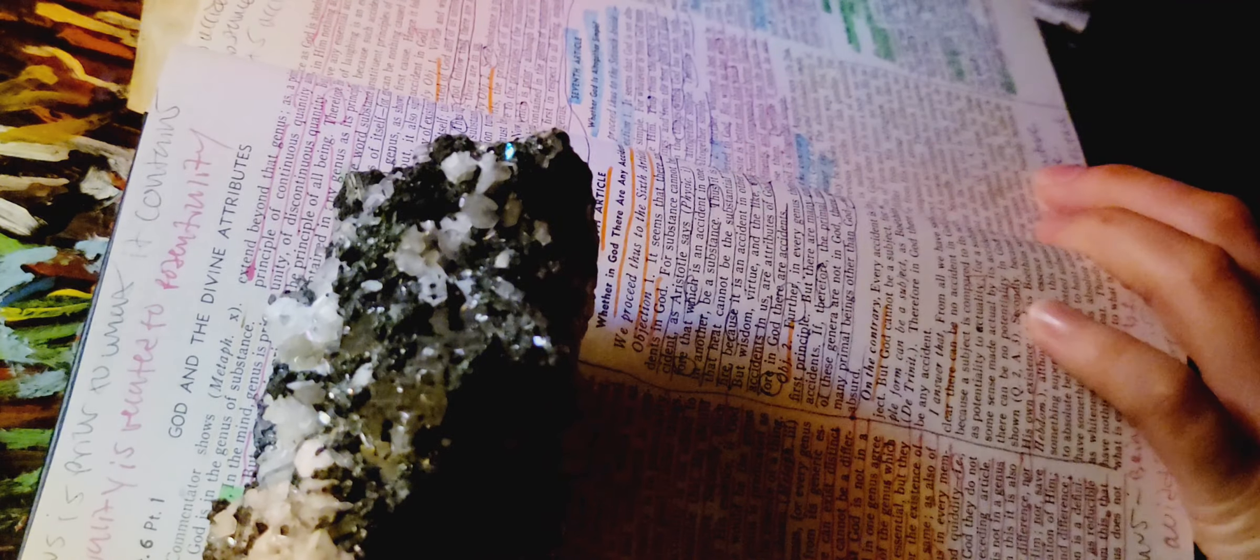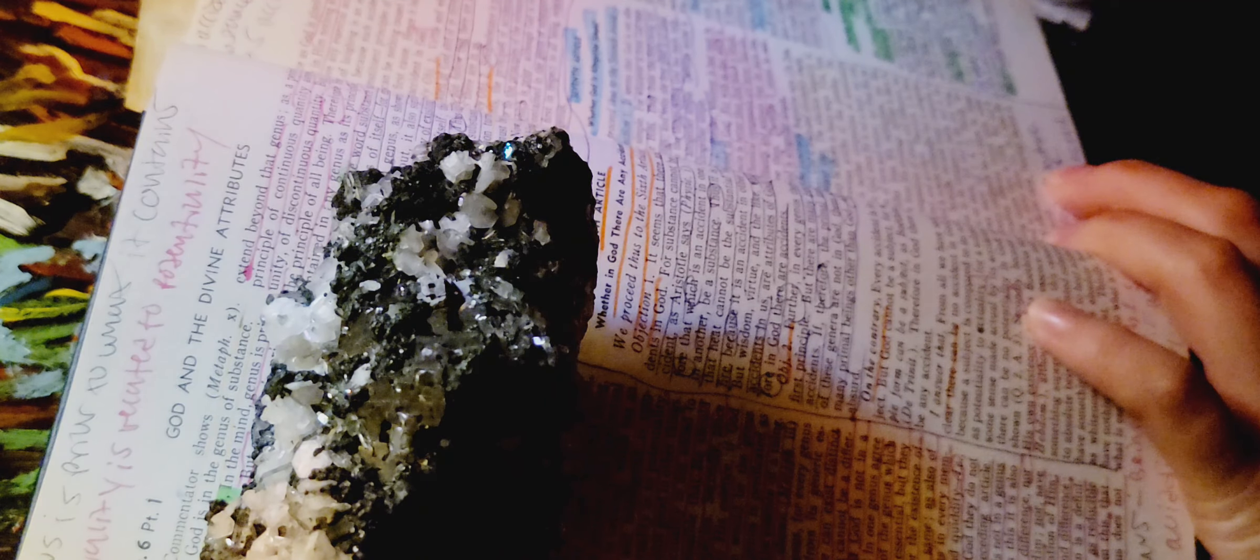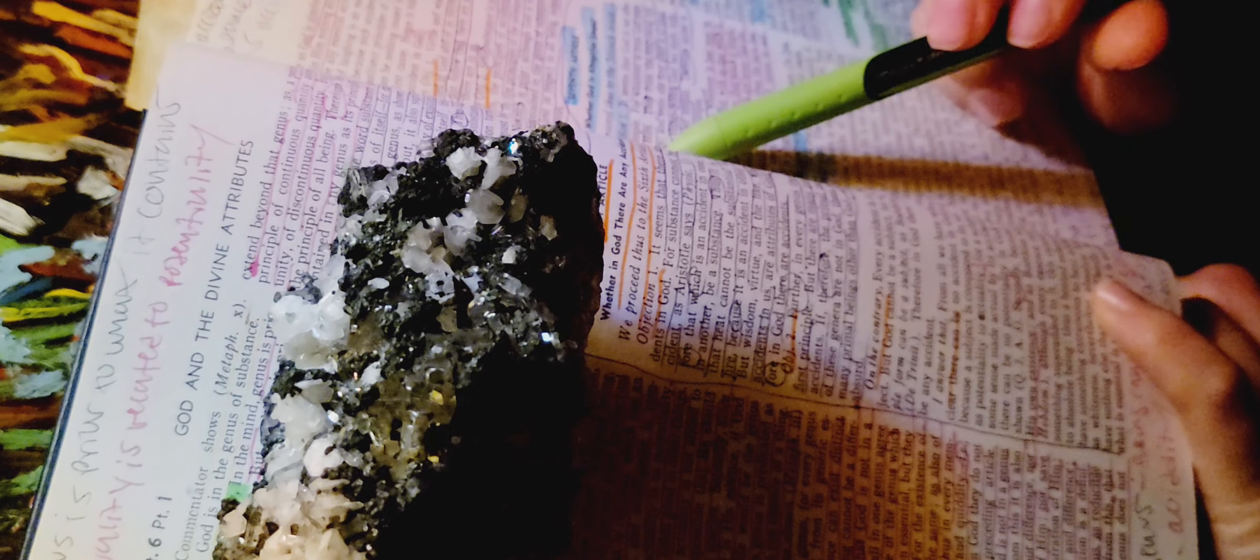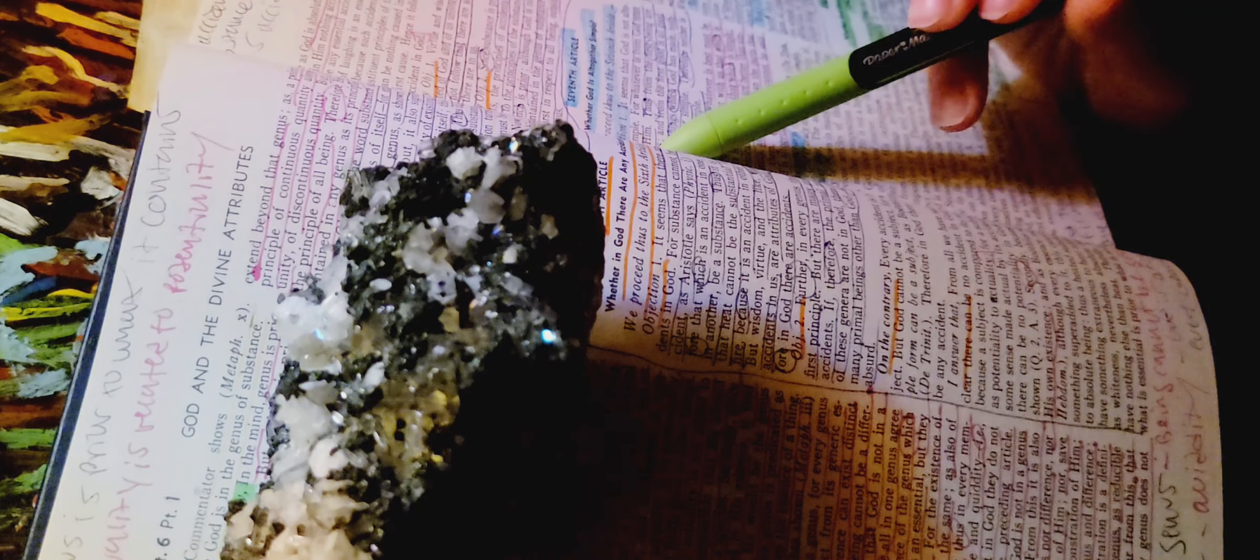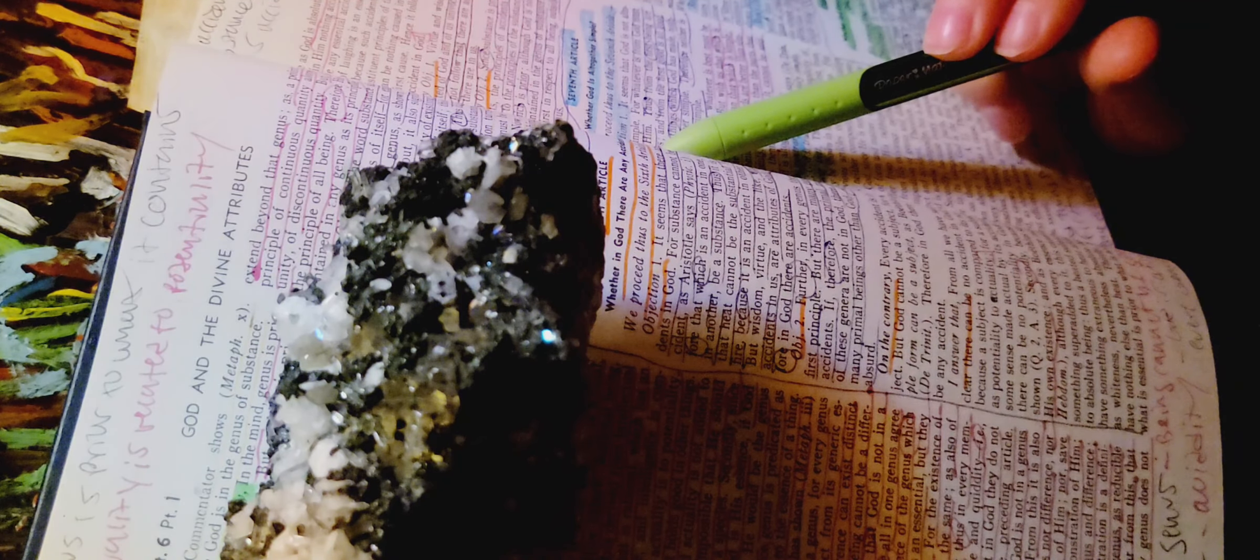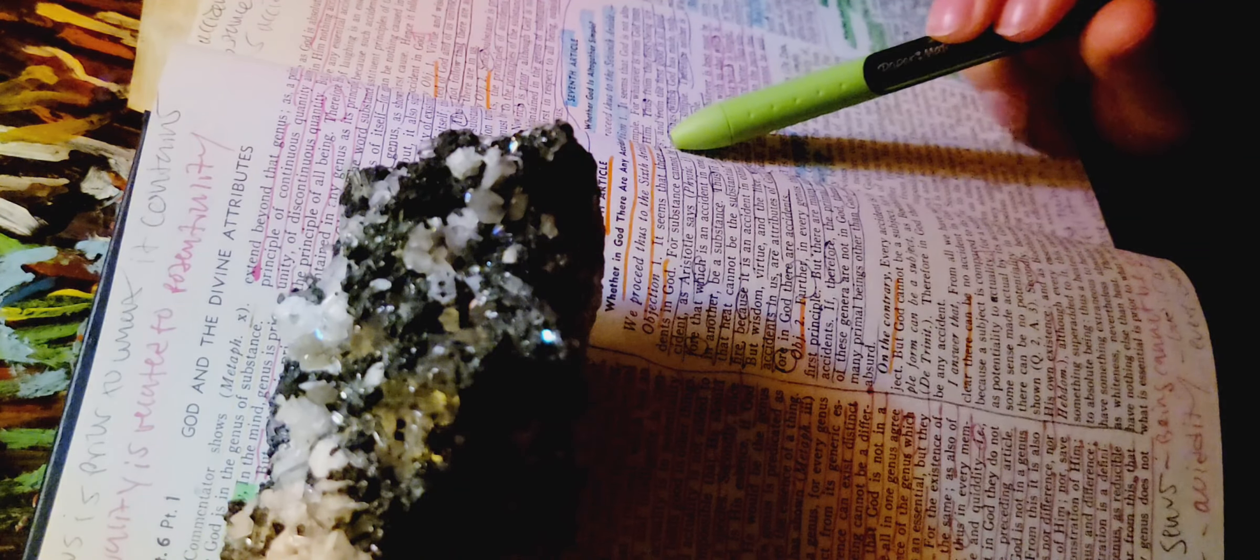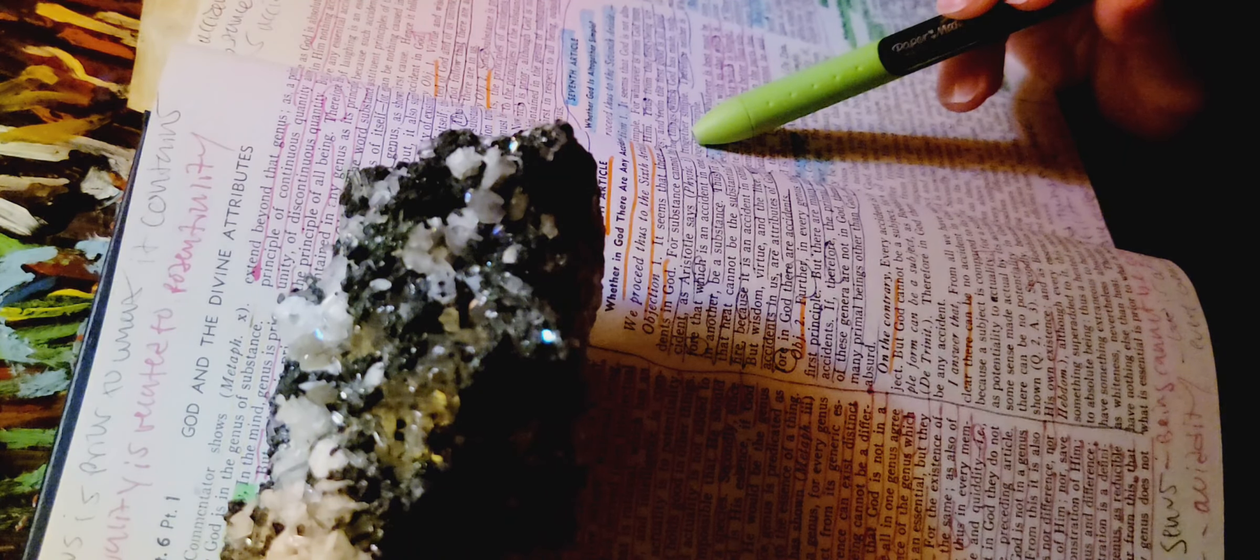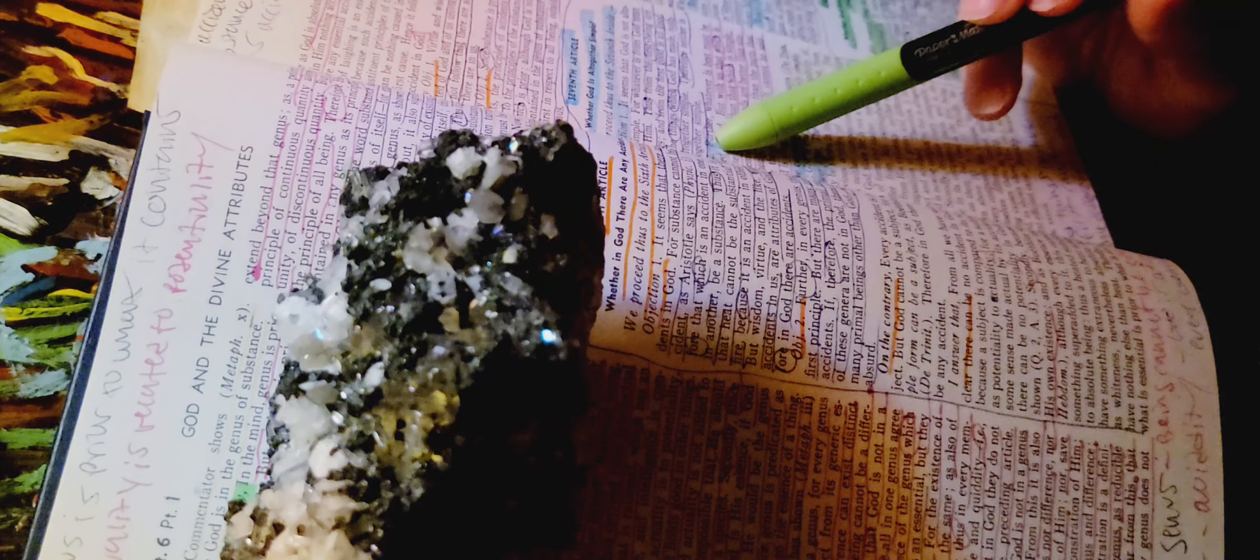Objection 1. It seems that God is not altogether simple. For whatever is from God must imitate him. Thus from the first being are all beings, and from the first good is all good. But in the things which God has made, nothing is altogether simple. Therefore, neither is God altogether simple.